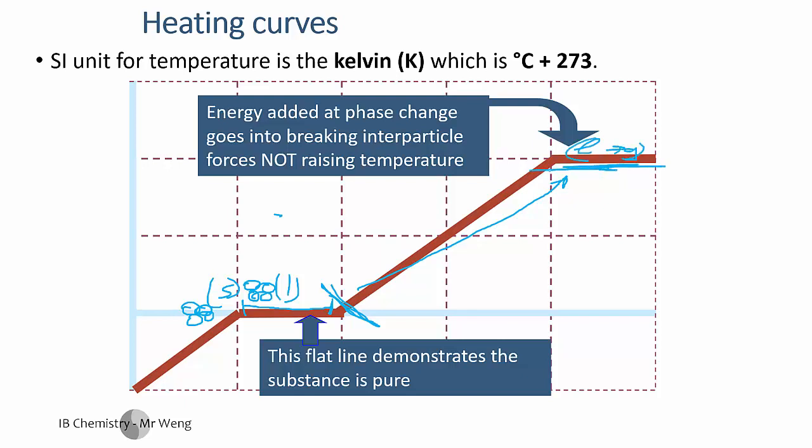Alright. Now you're only going to get these straight lines if it's a pure substance. And so that is one way to use it. Just to mention now, a Kelvin is the temperature scale that we use. So that's degrees Celsius plus 273.